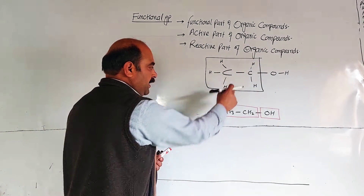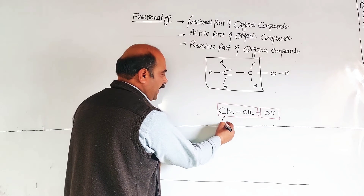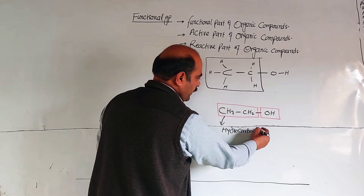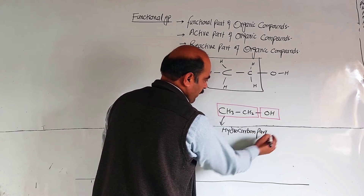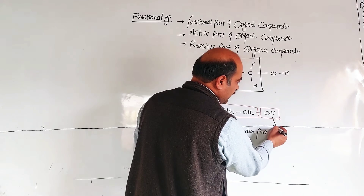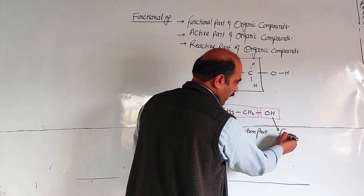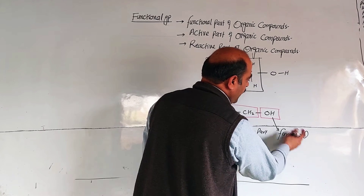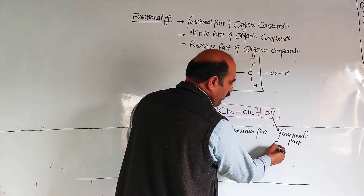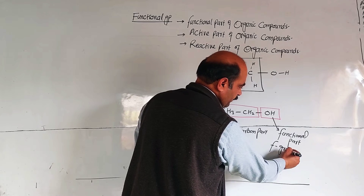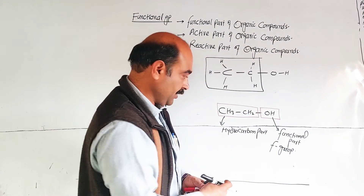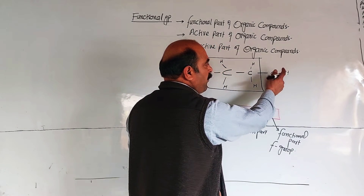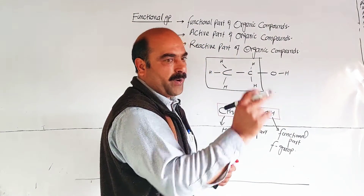An organic compound mainly has two parts. This portion is known as the hydrocarbon part. The other portion is called the functional group — the functional part — which will be active, functional, and reactive.